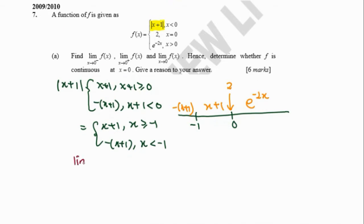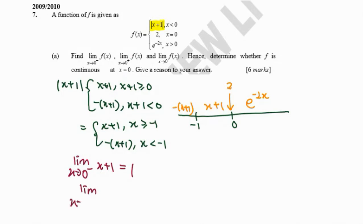Now we are going to answer the questions. Find the limit when x approaches 0 from the left-hand side. When x approaches 0 from the left-hand side, we select the function x + 1, which equals 1.